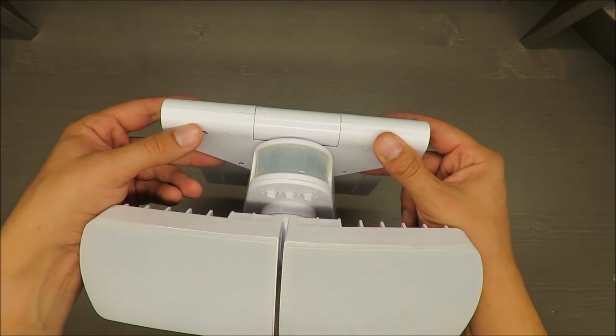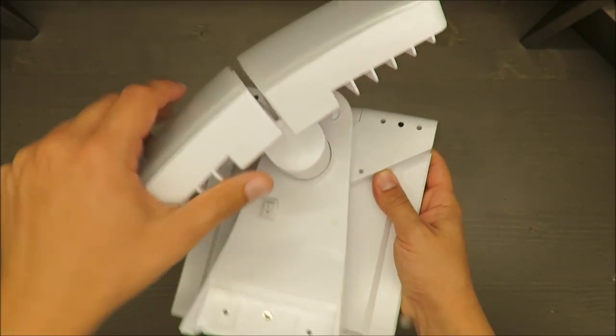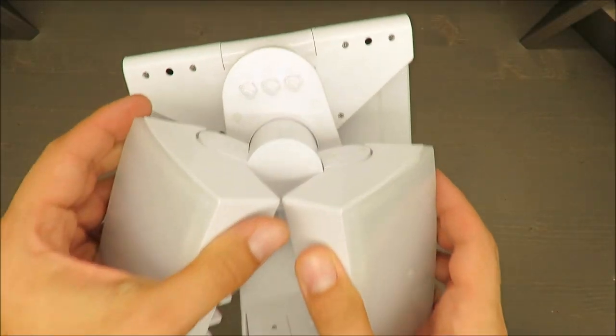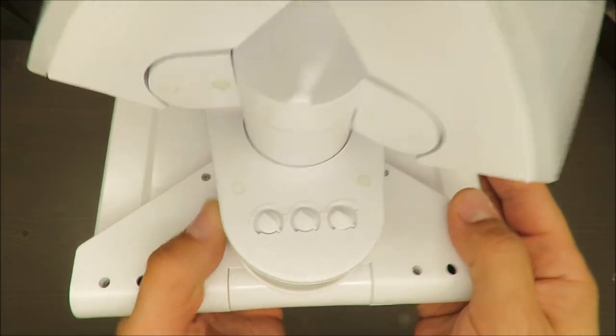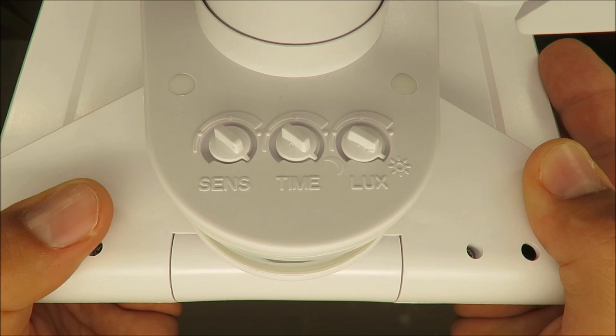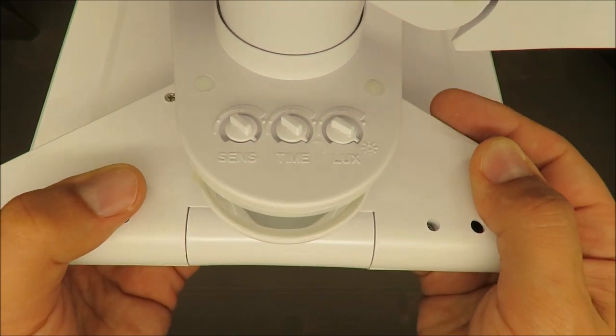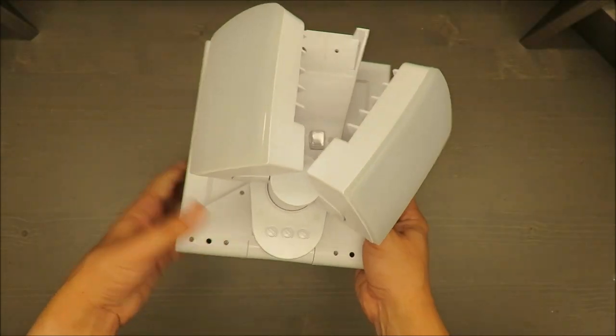It has also sensor motion detection with adjustable range from 4 up to 8 meters. I will try to show it to you here. Also, you can adjust light duration from 10 up to 60 seconds, so it's not a constant use.